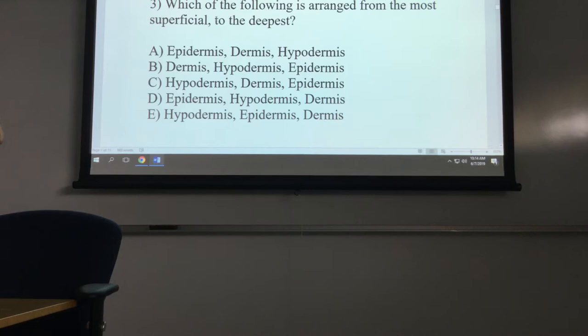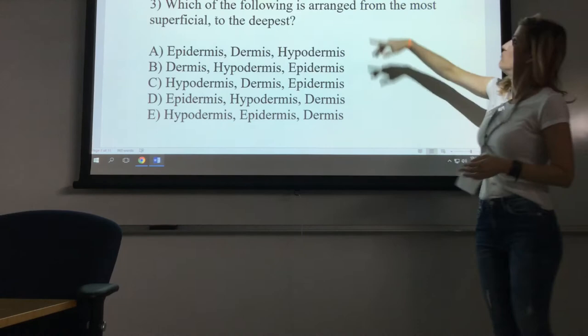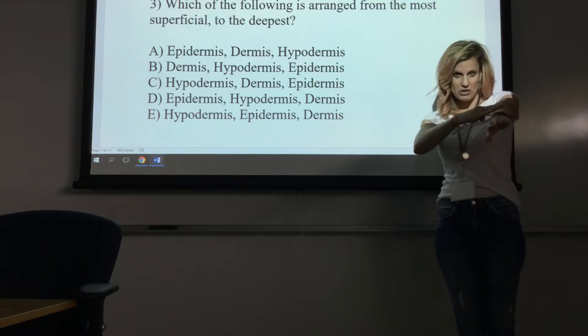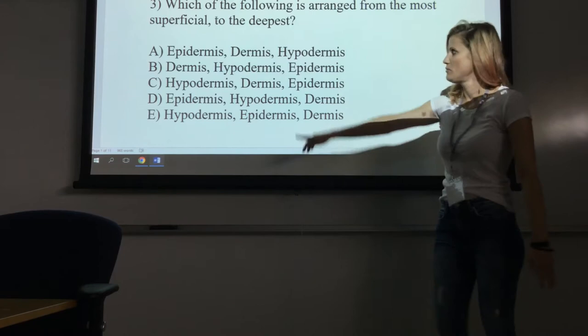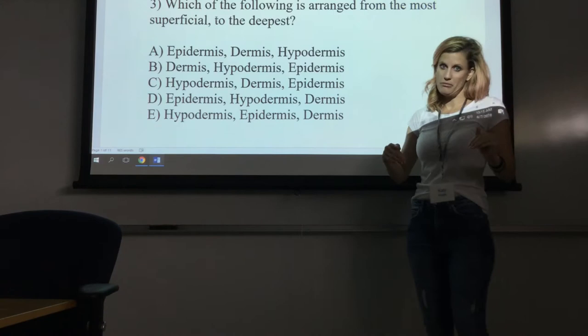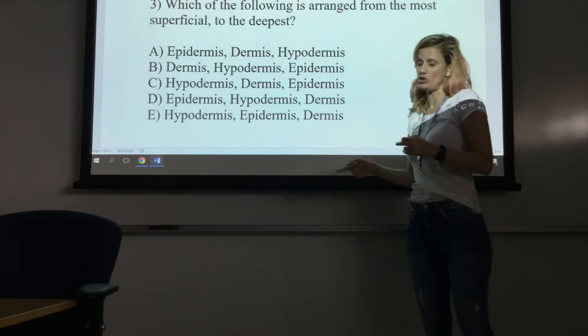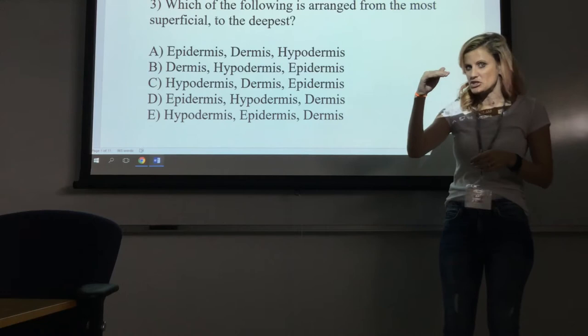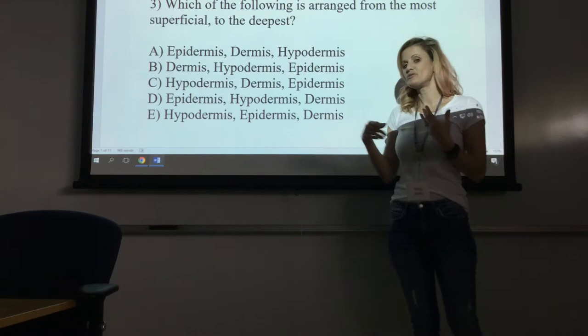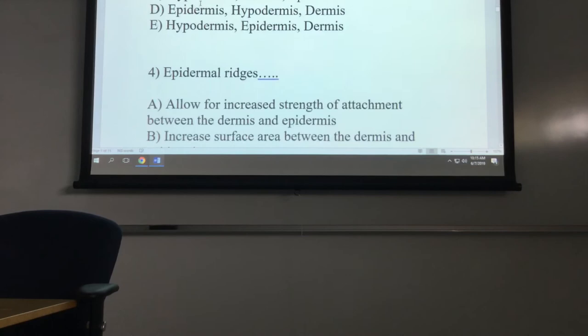Which of the following is arranged from the most superficial to the deepest layer? When we talk about the integumentary system, we have the epidermis, the dermis, and the hypodermis. The most superficial means the outermost. So the top layer is the epidermis, then the dermis, then the hypodermis. This could be asked in multiple ways — using the papillary layer, reticular layer of the dermis, or calling the hypodermis the subcutaneous layer. Understand the layers and their order.